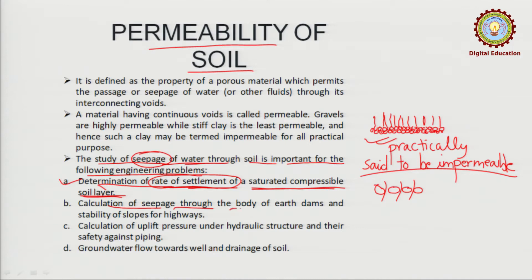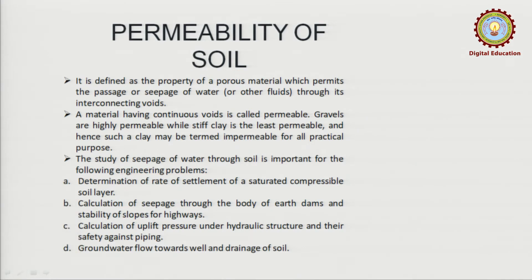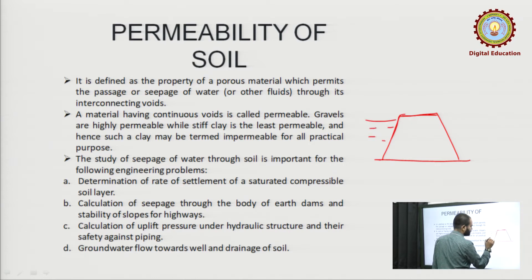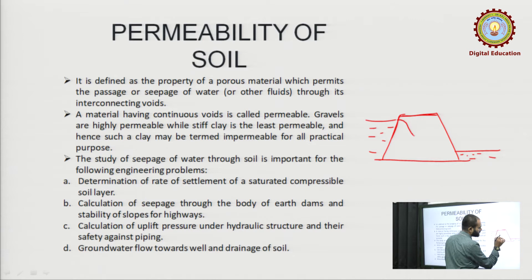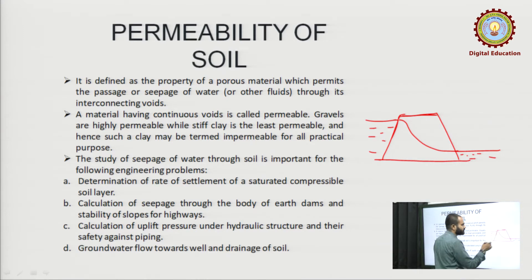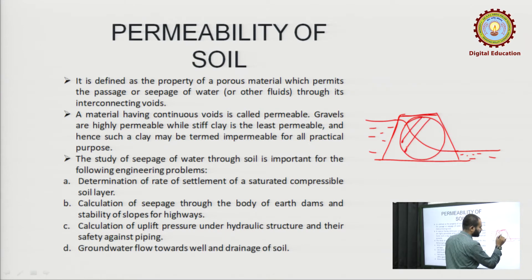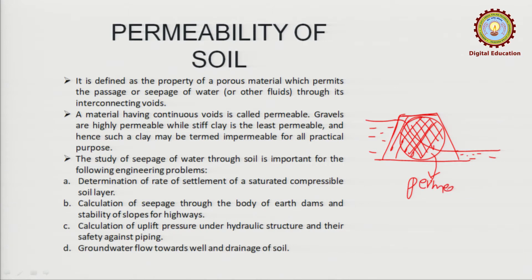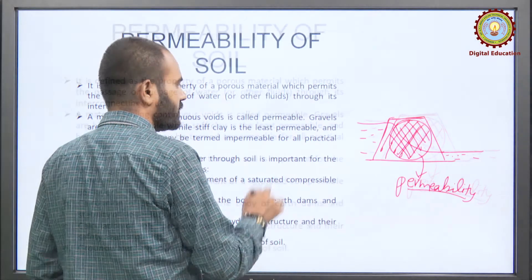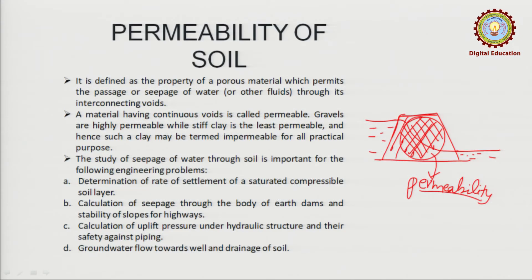Further, calculation of seepage through the body of earth dams and stability of slopes for highways. Suppose this is a dam — there is water on one side and also some water on the other side. Seepage takes place through the body of the dam. Whether there will be seepage or not can only be known when we know the permeability of this part of the soil. We can then take necessary measures so that no seepage occurs.